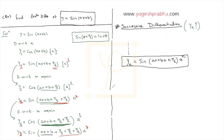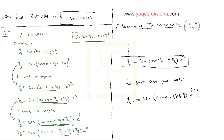Once we have this general formula for yn, we can find the 300th derivative by simply putting n equal to 300. So the 300th differentiation is a^300 · sine(ax + b + 300π/2). The key strategy for successive differentiation is: start differentiating once, twice, three times, find the pattern, and from that pattern determine the nth differentiation.